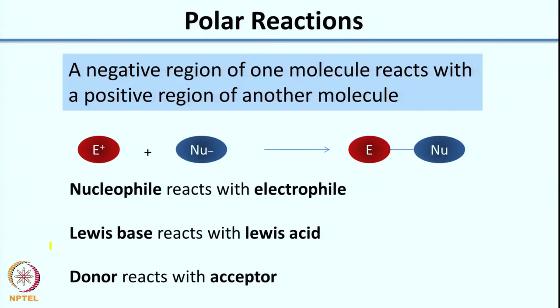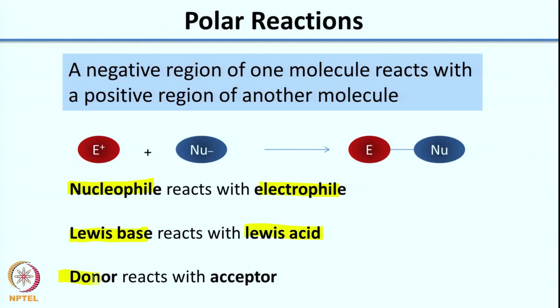A polar reaction is one where a negative region of one molecule reacts with a positive region of another molecule, essentially involving charged intermediates. In many textbooks you will see terms like nucleophile, electrophile, Lewis base, Lewis acid, donor, and acceptor. What all of these mean is that you have some electron-rich species and some electron-deficient species.